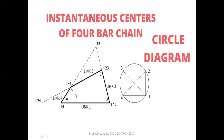This is the basic four-bar chain mechanism in which link 1 is fixed, link 2 is the crank, link 3 is the coupler, and link 4 is the rocker. Fixed ICR and permanent ICR can be directly located in the mechanism. ICR14 and ICR12 are the fixed ICRs, and ICR34 and ICR23 are the permanent ICRs. With 4 links, the formula gives 4×3/2 = 6 total ICRs. We have located 4 so far, so 2 remaining ICRs — ICR13 and ICR24 — still need to be found.